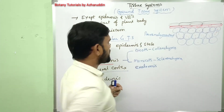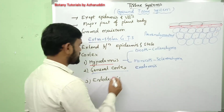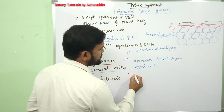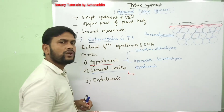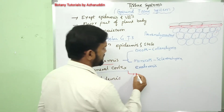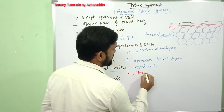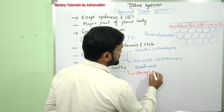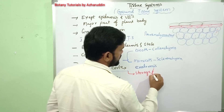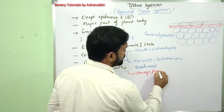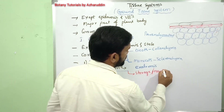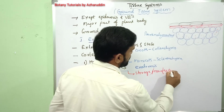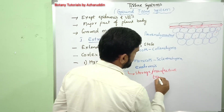The parenchymatous cells of the general cortex are responsible for storage and manufacture of food material.